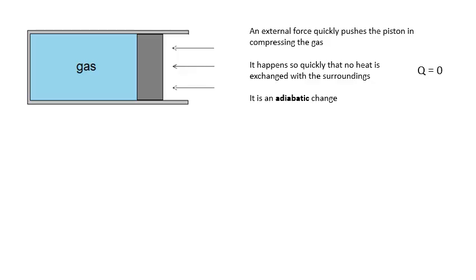Now there's another type of change, which is: let's say we were compressing the gas and an external force quickly pushes the piston in, and it happens so quickly that no heat is exchanged. What you'll probably find is that as you compress the gas, it gets hotter, and then some of this heat is lost to the surroundings. But if it's done very, very quickly, we can assume that no heat is exchanged with the surroundings. And that is an adiabatic change. An adiabatic change is when no heat is exchanged with the surroundings. In this case, no heat is lost.